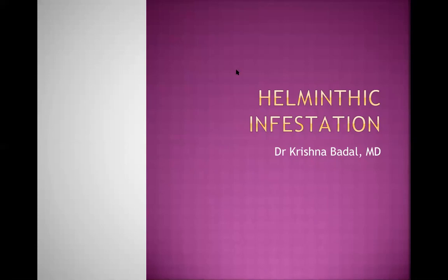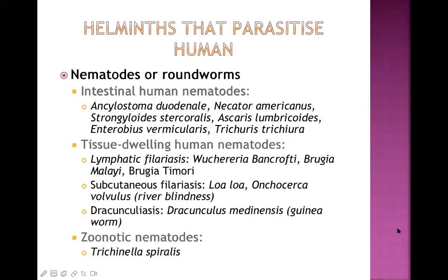Let's start with classification. The helminths which parasitize humans are divided into three headings: nematodes, which are also known as roundworms; trematodes, which are known as flukes; and cestodes, which are known as tapeworms.